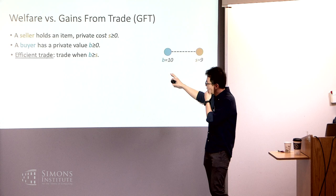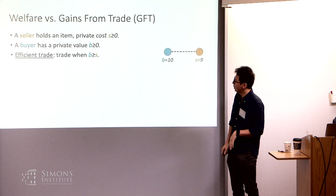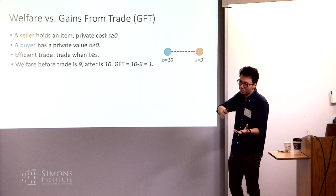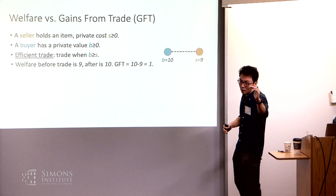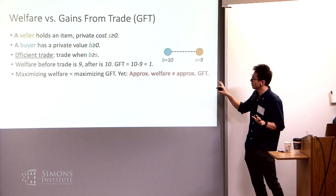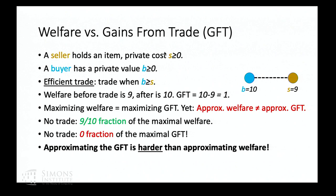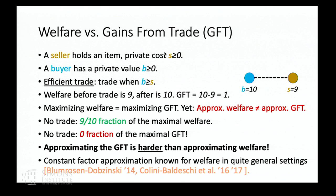Before describing those mechanisms, there's one more thing to discuss: there are two different ways to measure efficiency. One is just the traditional welfare concept; the other is called gains from trade — how much more welfare you get by running the mechanism. If the trade happens and welfare goes from nine to ten, the gains from trade is one. When maximizing, these are the same, but when approximating, the two concepts are quite different. If you don't trade at all, it's a good approximation for welfare but gives you zero gains from trade. The goal for this talk is to approximate the gains from trade — it's a harder task, but that's what we compare to.